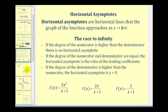Now let's talk about horizontal asymptotes. Horizontal asymptotes are horizontal lines that the graph approaches as x approaches either positive infinity or negative infinity. One way to think about it is to imagine the numerator and denominator racing to infinity. If the degree of the numerator is higher than the degree of the denominator, as in this first function, there will not be a horizontal asymptote. The degree of the numerator is three and the degree of the denominator is one, so as x approaches positive infinity, the numerator increases faster and the function value increases without bound.